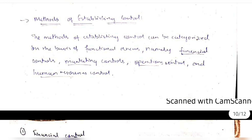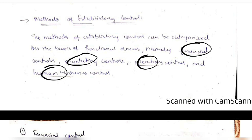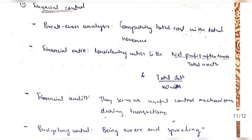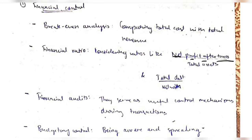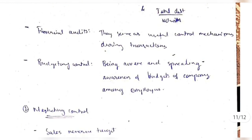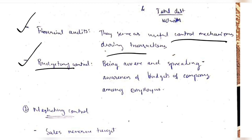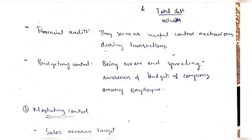There are four domains for establishing control. In the financial domain: cost-profit analysis, financial ratios such as net profit after taxes divided by total assets and total debt by net worth, financial audits as a useful control mechanism during transactions, and budgetary control — being aware of how much cost is going to a particular project and optimizing it to prevent wastage.